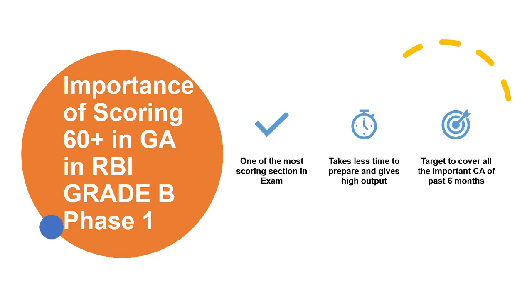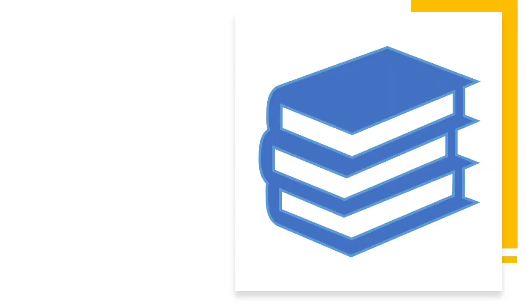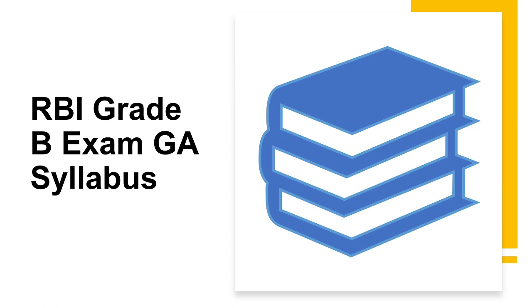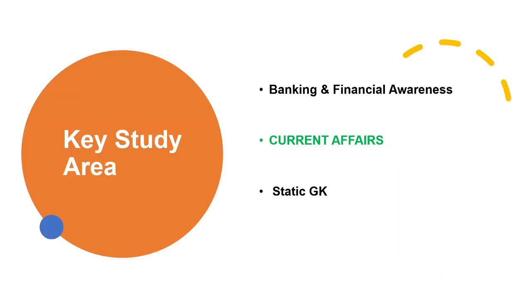General awareness is one of the most scoring subjects in your Phase 1 examination. It takes less time to prepare, and if you target current affairs, banking awareness, and financial awareness, it will help boost your score. Preparing banking and financial awareness will also help you in the ESI as well as Finance paper and even during your interview.